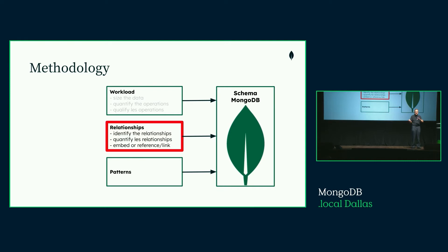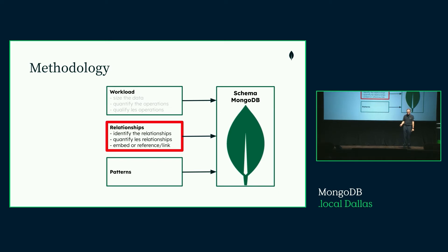Out of that first phase, we have a good description of the workload. Now we look at relationships. Relationships are always the same between objects — a relationship between first name and last name is one-to-one; between me and my credit cards is one-to-many. It doesn't matter if you're using NoSQL — relationships are always there. We're going to identify and quantify them, which is a bit different from relational modeling, and then answer the most important question for MongoDB modeling: should you embed or reference the different entities?